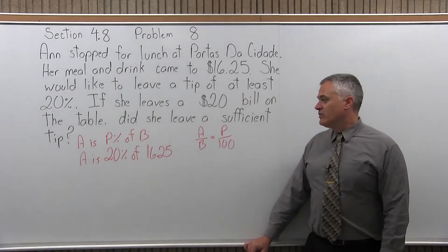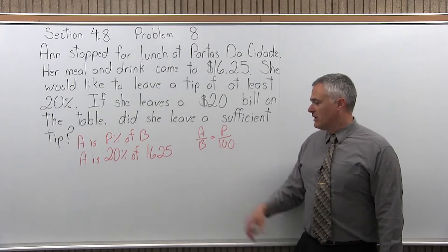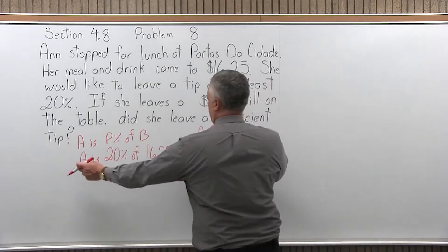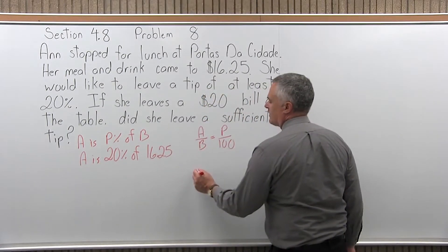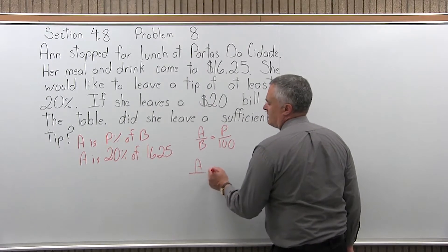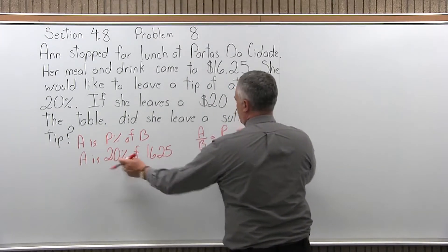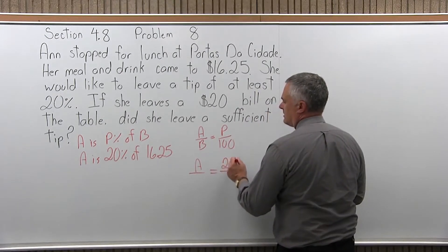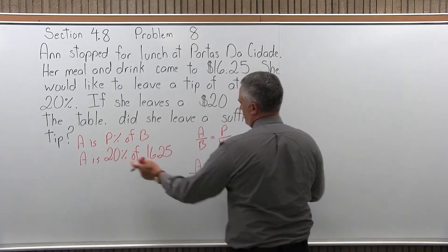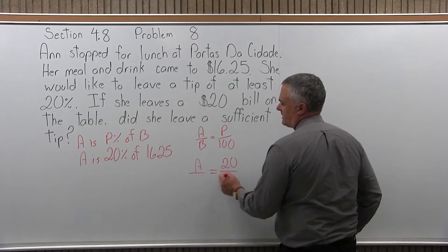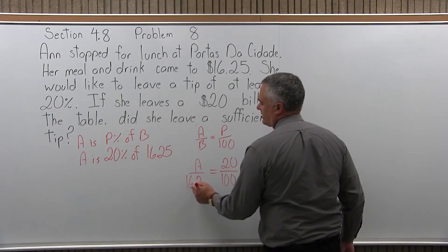So, I have rewritten it, I can use my formula. Plug it in, A is the unknown, it will stay as A. Is gives me the equals, P is 20, the percent is where the 100 comes from, and $16.25.